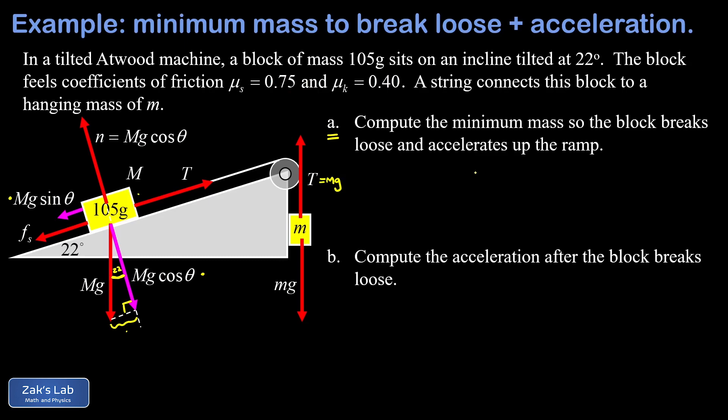Now I want to point out just as a quick preview, what happens if we increase that mass by like one nanogram, then it would exceed this breakaway value, the 105 gram block would break loose. Suddenly, we shift down to the kinetic friction coefficient instead of static. So the friction gets way less and we just take off and start accelerating up the ramp. But for the analysis of part A, it is a completely static problem still.